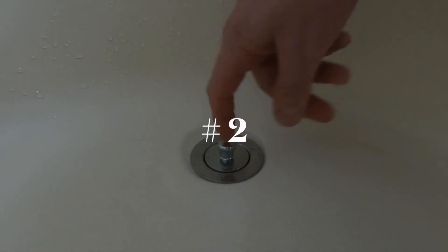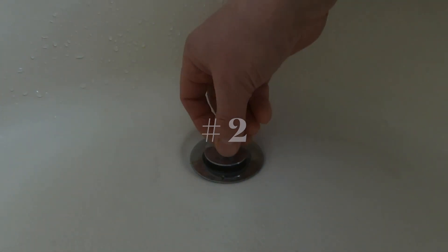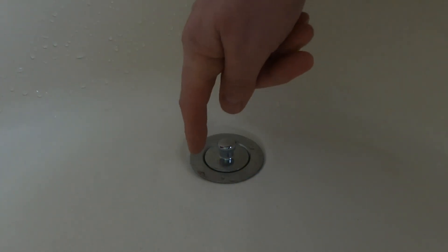Maybe your tub drain is draining slowly. This is a lift and turn. You lift it, turn it to drain the tub. Turn it to put it down. A lot of times this gets hair in here, but it's hard to get this out, right? It just keeps wanting to spin.